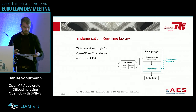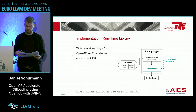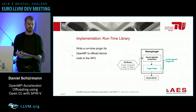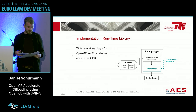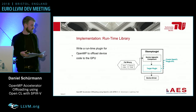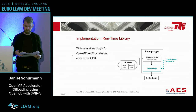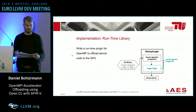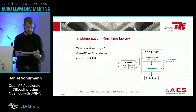At runtime, to offload the code to an accelerator, it calls the libomp target library, which is part of the OpenMP subproject of LLVM. We created a plugin for the SPIR-V kernels to make the appropriate OpenCL calls for things like context creation, device memory management, kernel compilation, parameter setting, and execution.